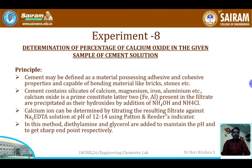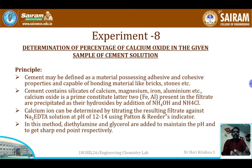Magnesium cannot be easily removed because it has similar properties to calcium. Therefore, magnesium interference is prevented by adding NaOH. The calcium ion can then be determined by titrating the filtrate against Na₂EDTA taken in the burette at around pH 12 to 14.